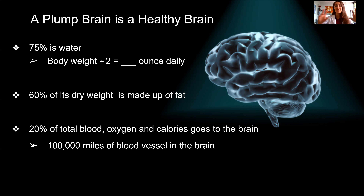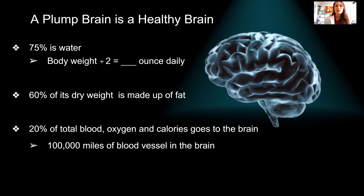I teach my patients the concept that a plump brain is a healthy brain — that's how we prevent atrophy and degeneration. 75% of your brain is actually water, which is why staying hydrated is so important. The equation I use is half your body weight in ounces as a minimum water intake. If you work out, use a sauna, or it's a hot day, you need more. We also need the right electrolyte balance, cell salts, and a healthy filtered source of water.